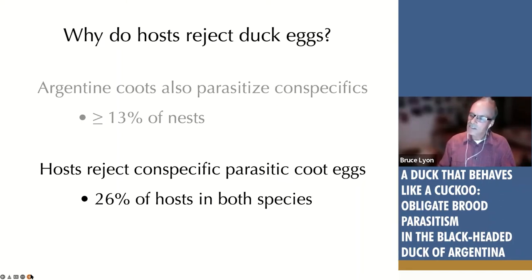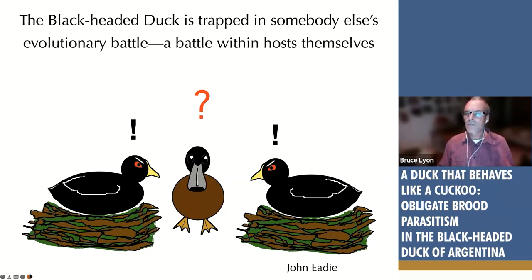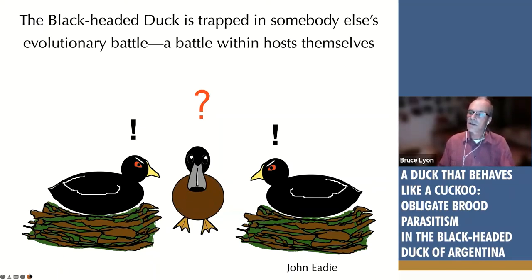Argentinian coots parasitize each other — red-gartered coots lay eggs in other red-gartered coot nests, and red-fronted coots do the same. This is a bare minimum estimate; it's probably more common than that. And hosts reject these conspecific parasitic coot eggs. In addition to rejecting duck eggs, these coots are rejecting eggs from other coots.